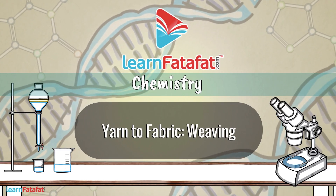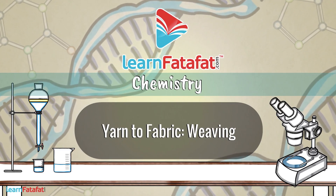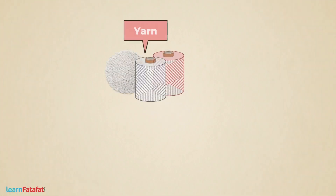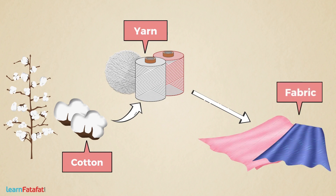Yarn to Fabric: Weaving. After making yarn from the cotton, it is then processed to make fabric. There are a variety of methods for making fabric from yarn. In this lesson, we will learn about weaving.